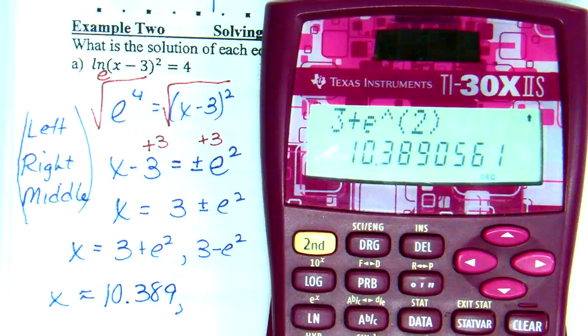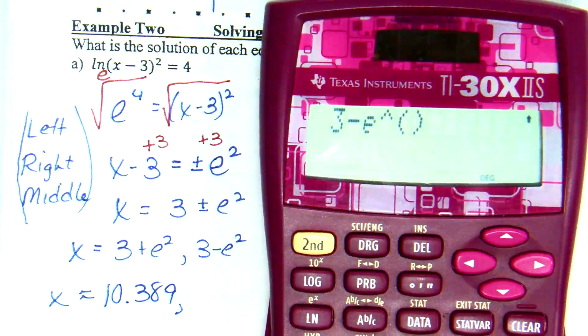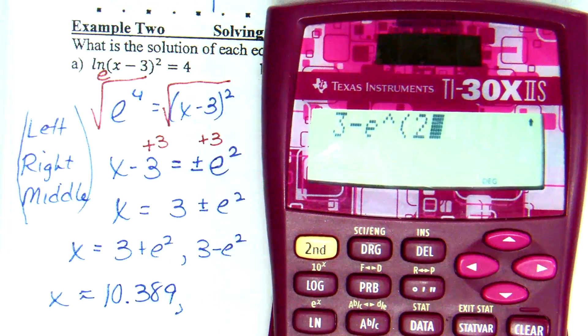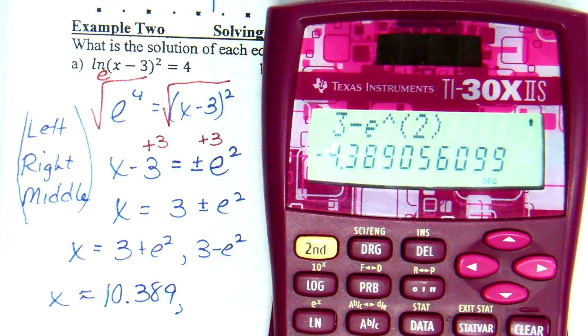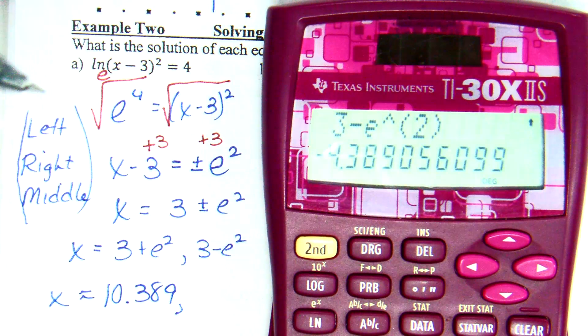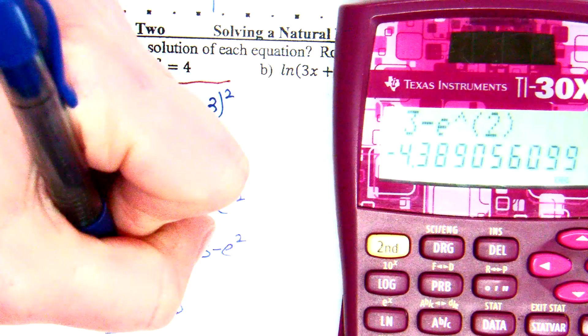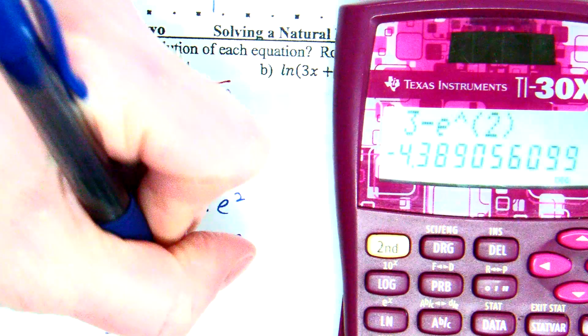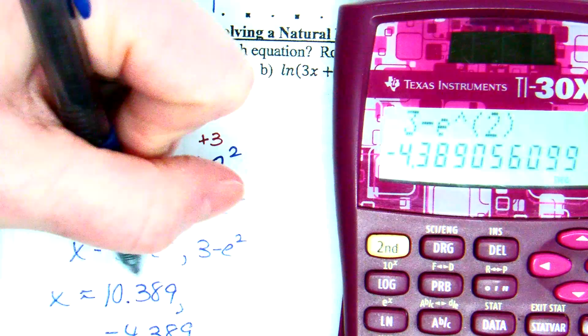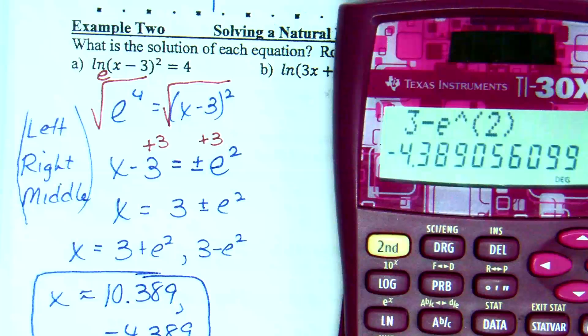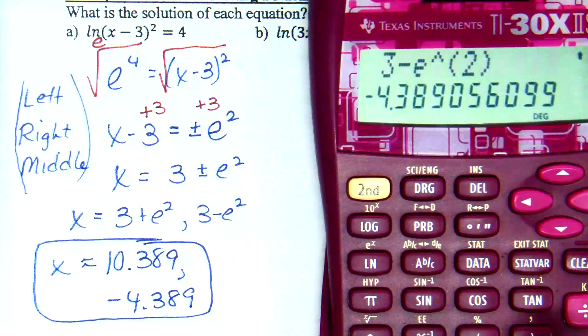Keep the process. 3 minus E to the second. That was going to give me a wrong answer, huh? Negative 4.10. Why is this positive? It's negative. Definitely negative. I think yours is broken. Negative 4.389. And the zero tells the nine to stay.